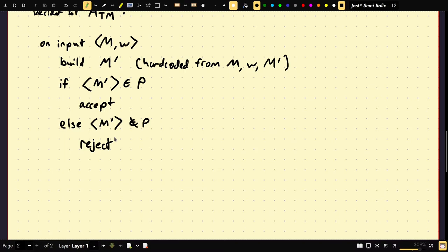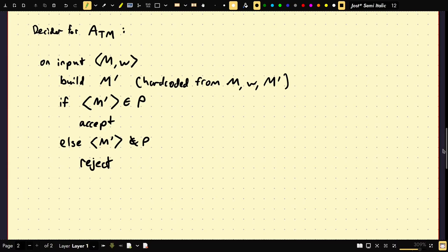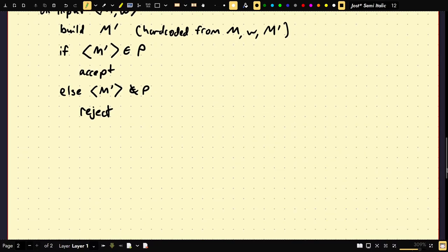So this is a decider, first of all. We're assuming to the contrary that P is decidable, so this can run, both of these can run and halt correctly. Building M runs in finite time, so this whole thing runs in finite time. So this is clearly a decider for ATM, which we know to be undecidable. Therefore, by reduction, P is undecidable. That's contradicting our assumption. But this is for any non-trivial property P.